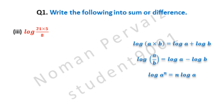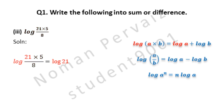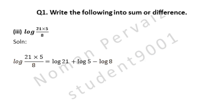Next, part 3 of question number 1, exercise 3.3: write the following into sum or difference. Part 3 is log(21 × 5 / 8). Both first and second properties will be applied because this question involves multiplication as well as division. Is equal to log 21 + log 5 − log 8. Multiplication is converted to plus, then second property converts division to minus. You can also see the details on the right side. Hence, this is our answer.